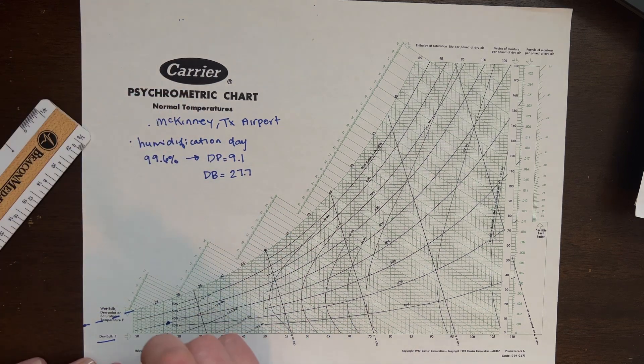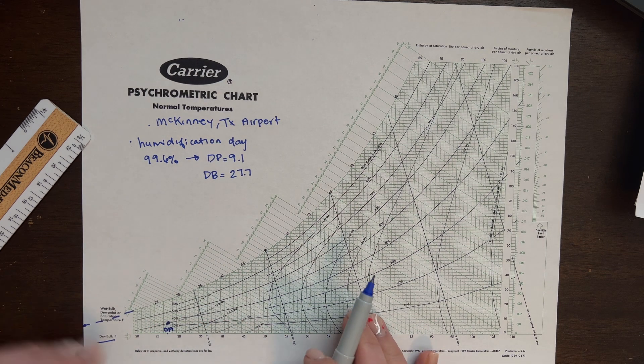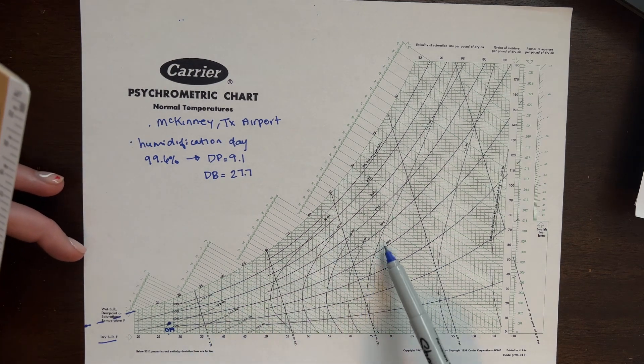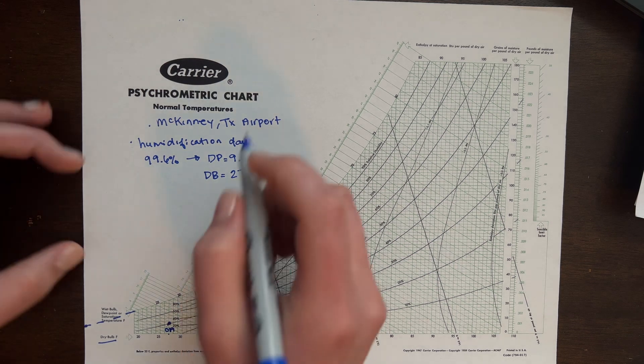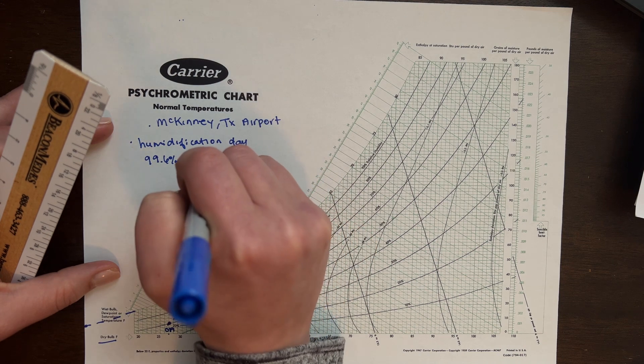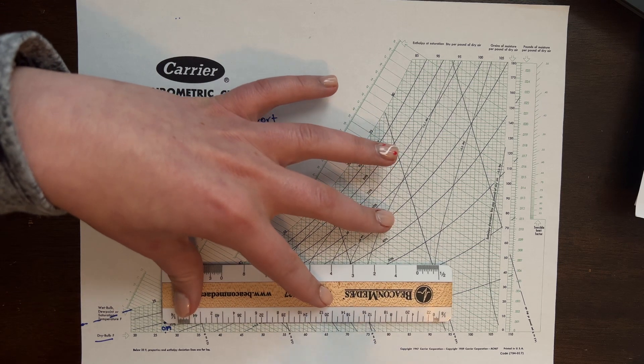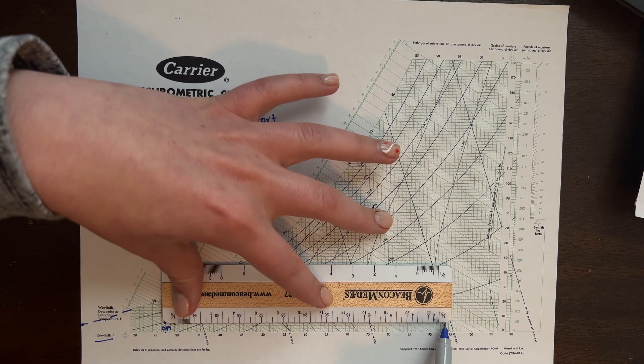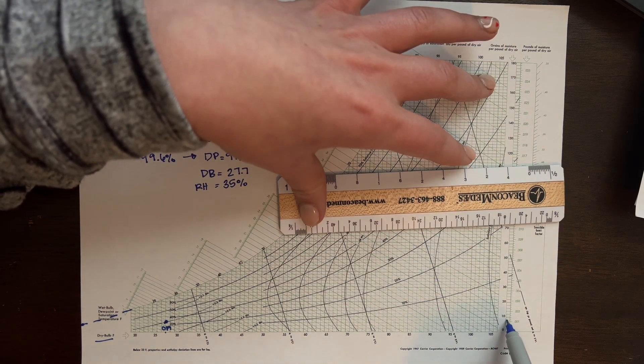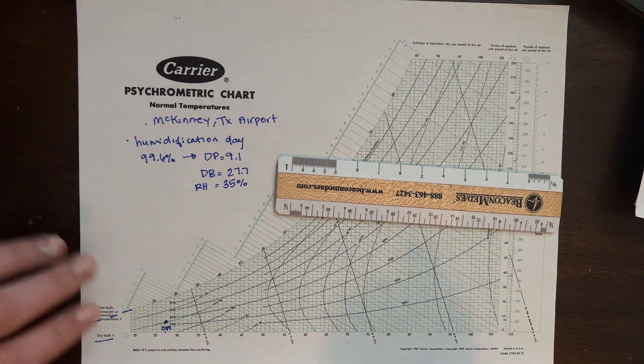And that is my outside air condition on my humidification day. Okay, that gives us about a relative humidity, about 35%. And then if we go all the way directly across to the right until we get to our grains, it's going to give us about eight grains of moisture.